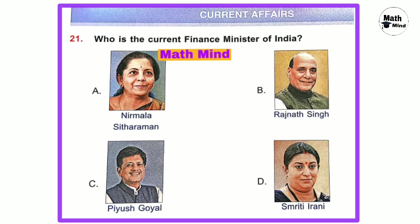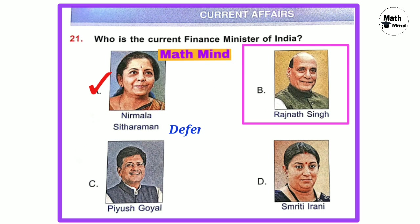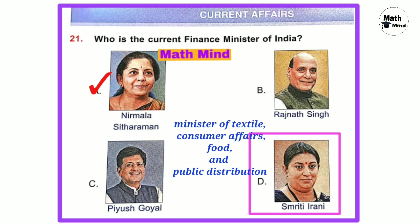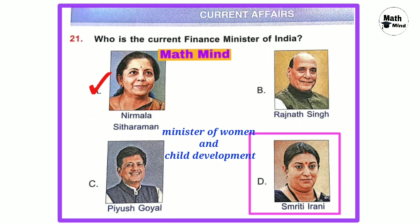Current Affairs. Question number 21: Who is the current Finance Minister of India? Option A is correct — Nirmala Sitharaman. Option B — Rajnath Singh is the Defense Minister. Option C — Piyush Goel is Minister of Textiles and Consumer Affairs. Option D — Smriti Irani is Minister of Women and Child Development. All are ministers of the Union Cabinet of India.